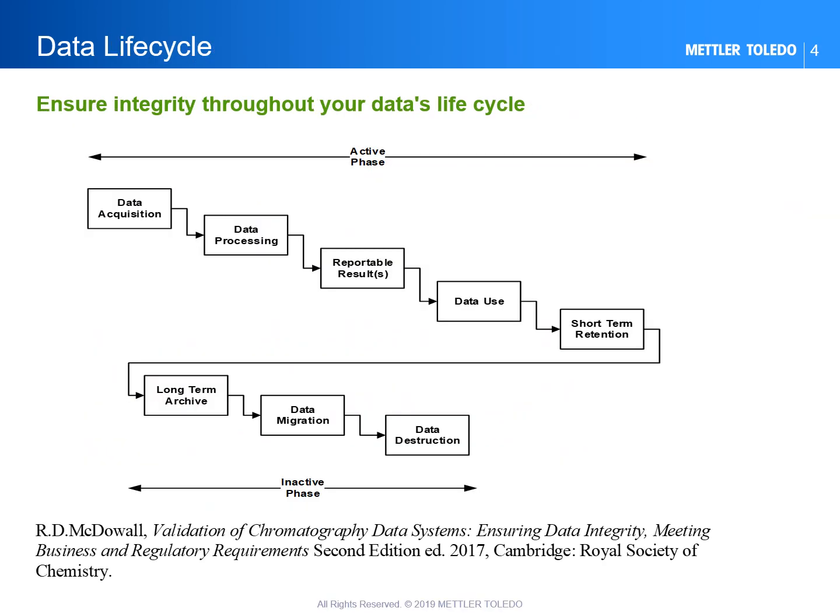Data integrity principles apply throughout your data's life cycle. One of the important concepts of the data life cycle is that of phases. The life cycle has two phases: active and inactive. The active phase is the shortest part of the life cycle. During the inactive phase, data and records are stored for the remainder of the record retention period — a phase that can last up to 30 years in some cases.